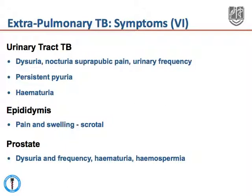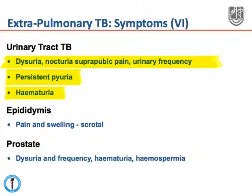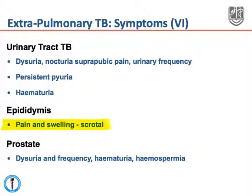In the urinary tract, many patients with urinary tract TB may present with nothing specific. However, specific symptoms include dysuria, nocturia, suprapubic pain, and urinary frequency. When urine is examined, there is often persistent pyuria, and there may also be hematuria. Epididymal TB classically presents with scrotal pain and swelling, while prostate TB may present with dysuria and urinary frequency. Urine from these patients may show hematuria and hemospermia.